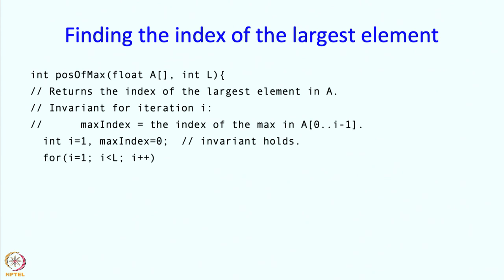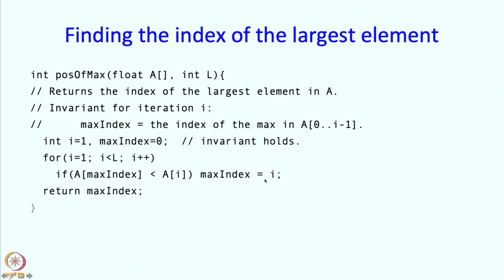We are going to increase i until l-1, and as we increase i, we want the invariant to hold. This is like our max-so-far, but instead of keeping track of the max value, we are keeping track of the index. So a[max_index] is the max so far, and if it is smaller than the new element, we set max_index equal to i. Either way, max_index will point to the largest element. At the end we return max_index. The number of comparisons needed is l-1, for each value of i going from 1 to l-1.